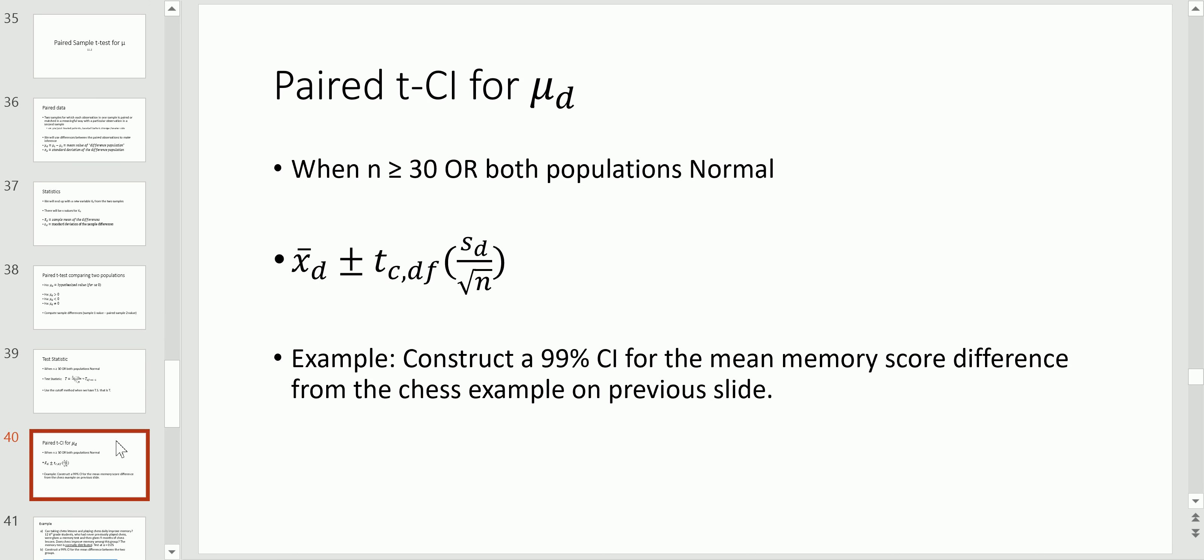Now confidence interval. Again, same condition. So check this large sample condition. You're going to get the point estimate and add and subtract the margin of error and the margin of error is very simply arrived at with the T multiplier with a certain level of confidence. Degrees of freedom n minus one. That comes from a T table. Standard deviation of the differences over the sample size.